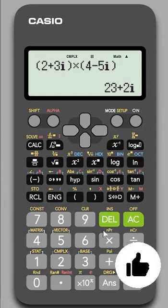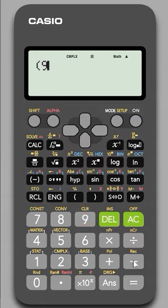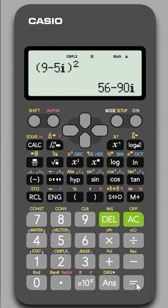Similarly, if you want to, let's take one more example. Let's say you want to find out 9 minus 5i whole square. It quickly does it for you.